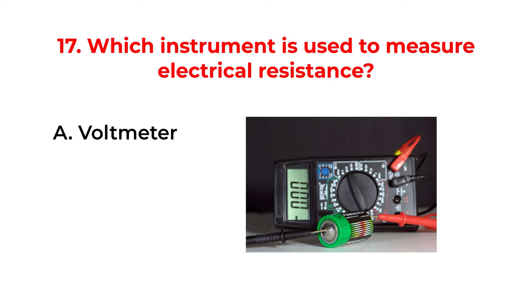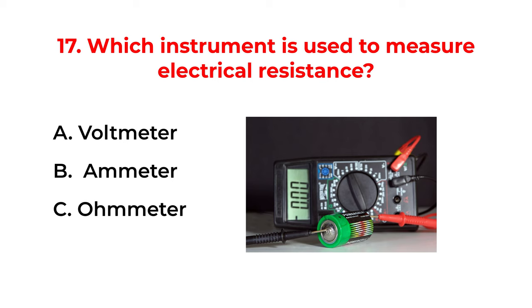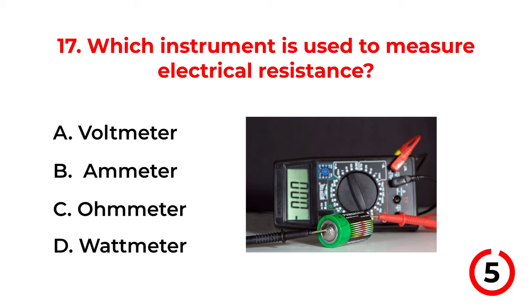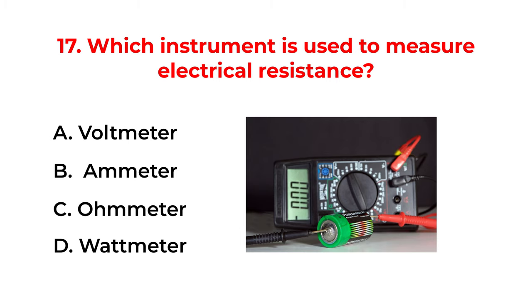Which instrument is used to measure electrical resistance? A. Voltmeter. B. Ammeter. C. Ohmmeter. D. Wattmeter. The correct answer is option C: Ohmmeter.